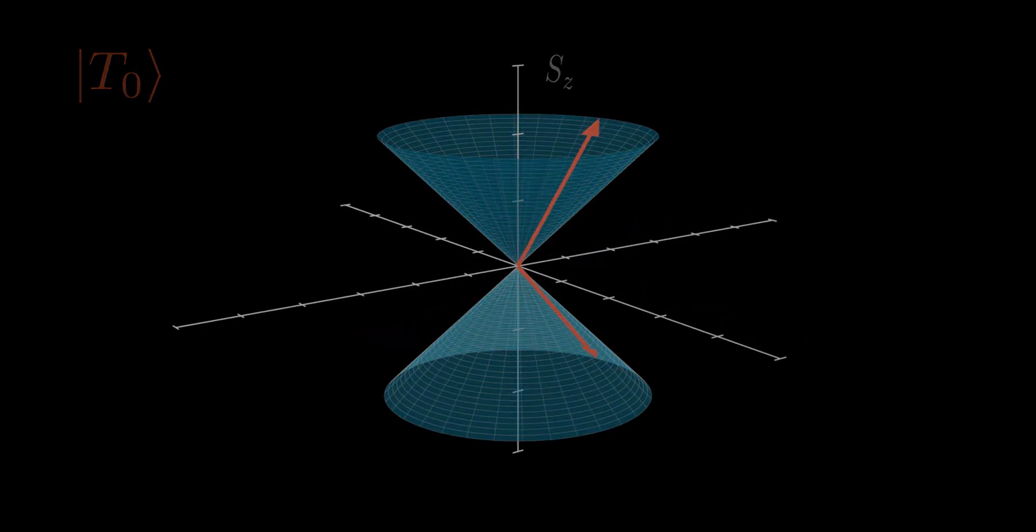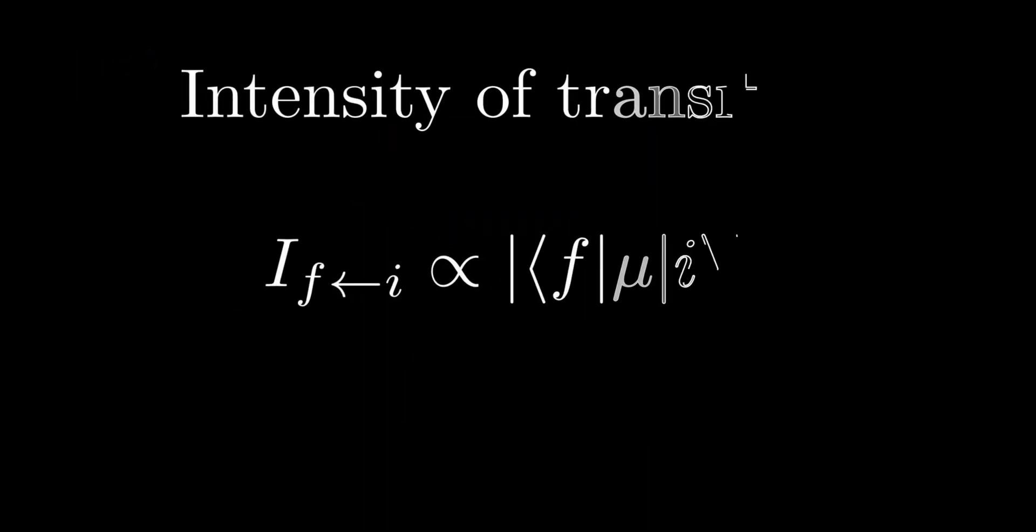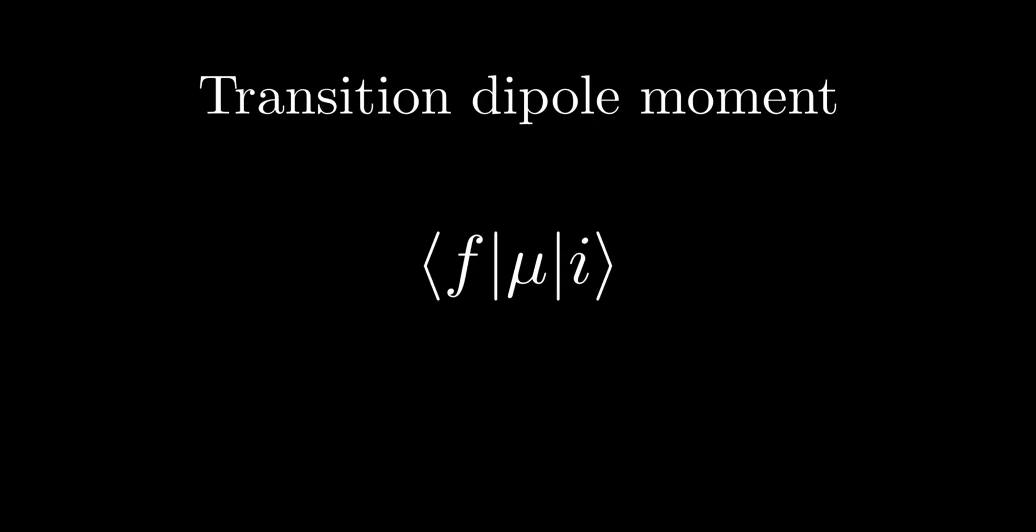Now, let's examine the transitions between these states in more detail. The intensity of a transition is given by the formula displayed on the screen. F mu i is called the transition dipole moment.